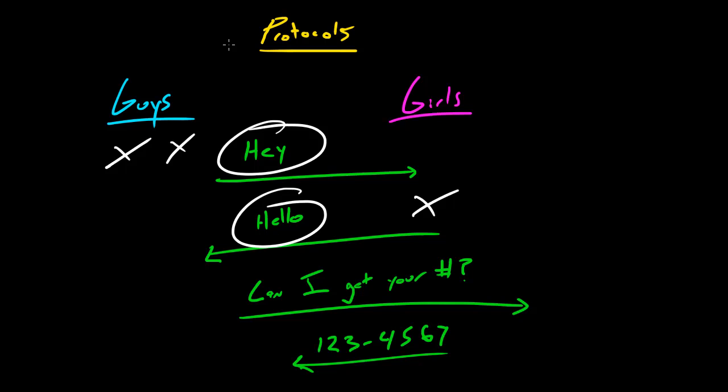So without following these basic rules - one, one person talks at a time; two, when a guy talks a response from the girl is expected; and three, specific messages receive specific responses - that's what makes communication possible with human beings and also what makes communication possible between computers.